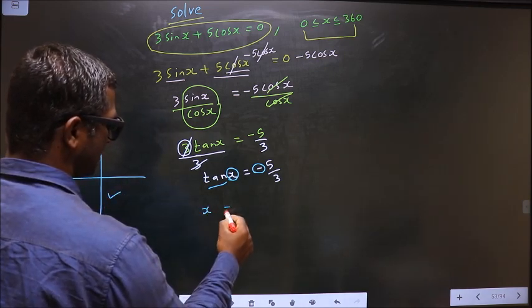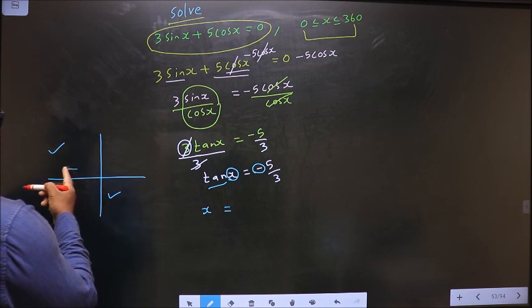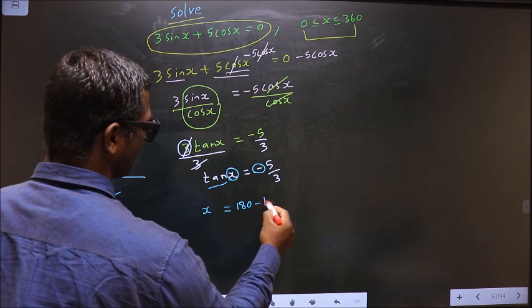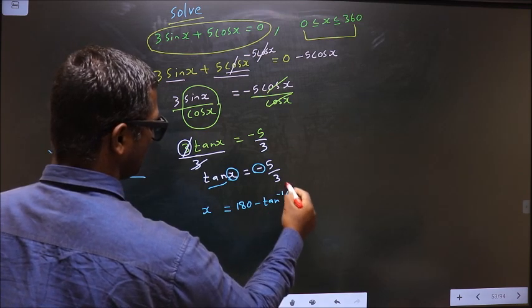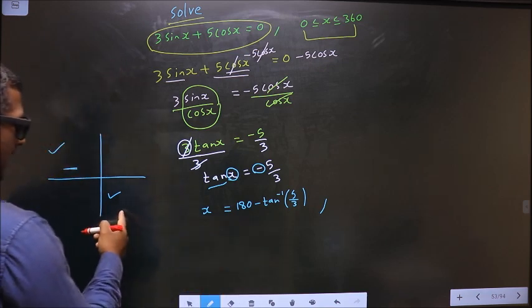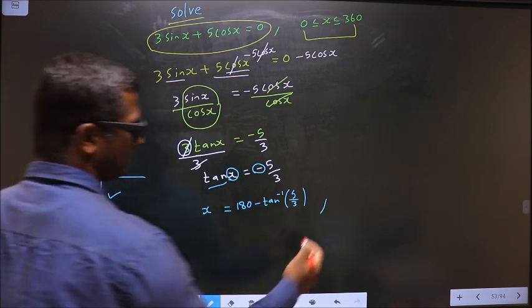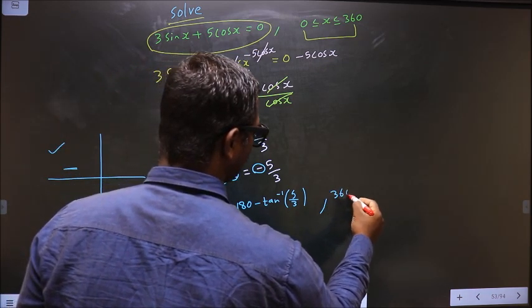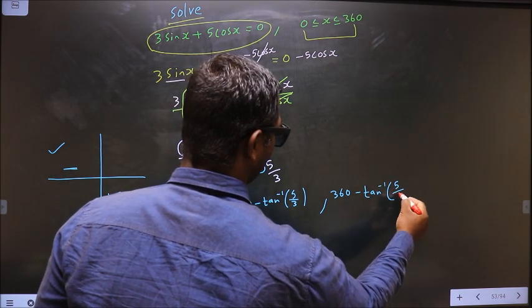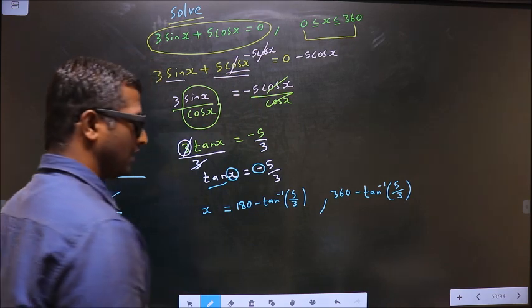So x equals. To get an angle in the second, we should do 180 minus tan inverse 5 by 3. To get an angle in the fourth, we should do 360 minus tan inverse 5 by 3.